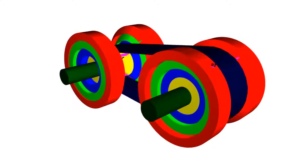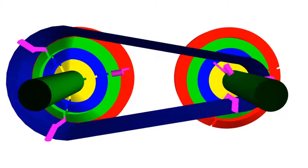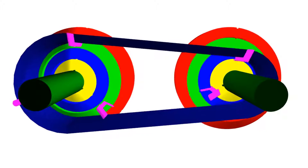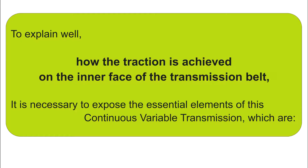Here we can see how the traction devices, shown in purple, exert traction on the inner face of the transmission belt. To explain well how traction is achieved on the internal face of the transmission belt, it is necessary to expose the essential elements of this continuously variable transmission.